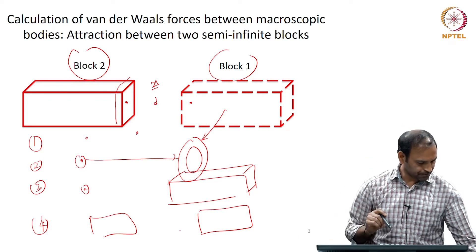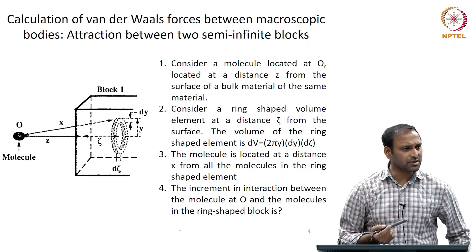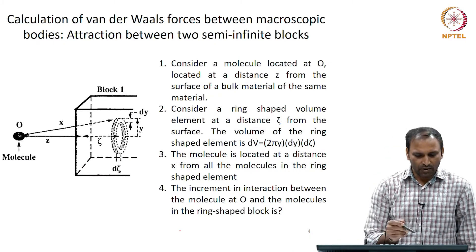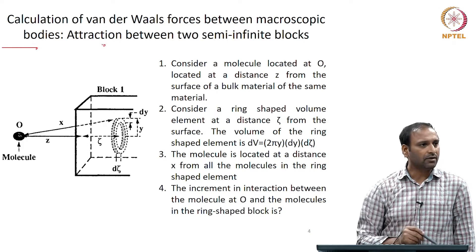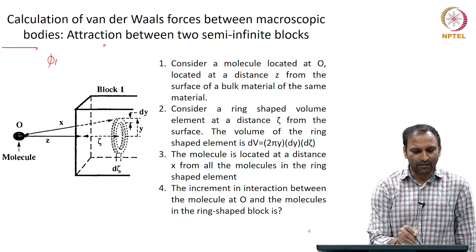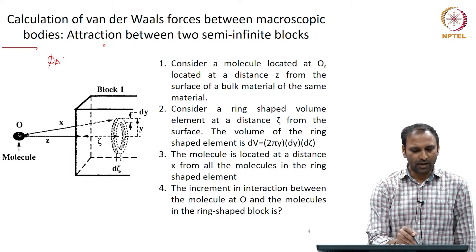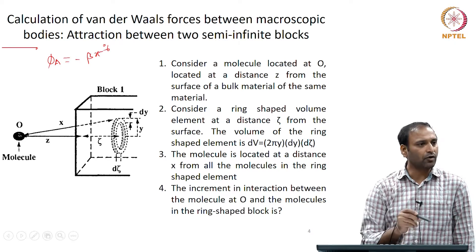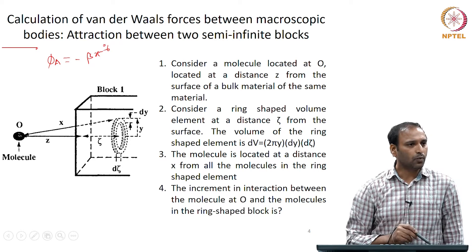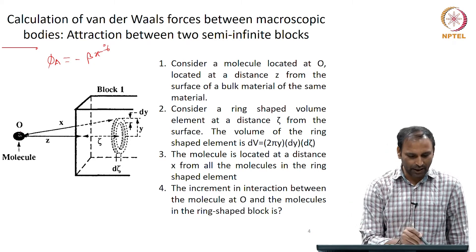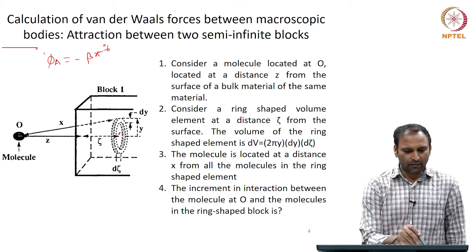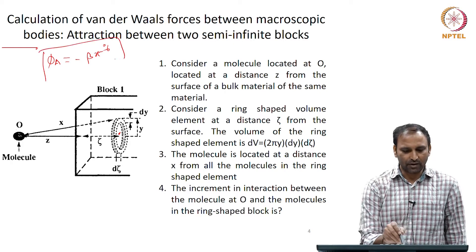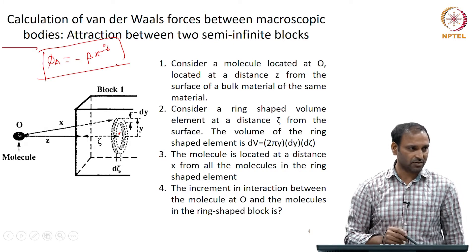For the interaction between atoms, we already know that phi — the Van der Waals interaction — is given by minus beta times x to the power of minus 6. So if I take one molecule here and another molecule there, the Van der Waals interaction between the two is given by this expression.